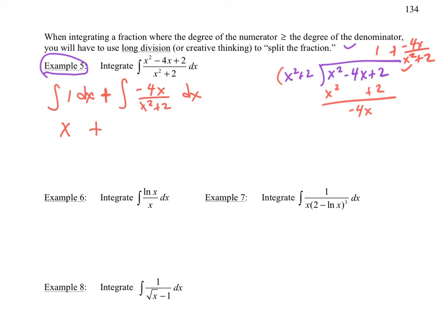This part though, I'd have to do a u substitution. Well I need a 2, and I got too much there, so I can split that up to a negative 2 times 2, and that gives me my negative 4. And so then I do have my u substitution, so this would just be negative 2 ln absolute value x squared plus 2, plus c.